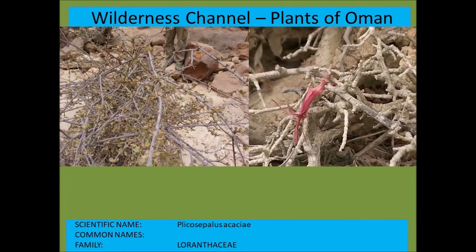This is the other Plicosepalus species — Plicosepalus acaciae — a hemiparasitic plant that grows on other plants, from the Loranthaceae.